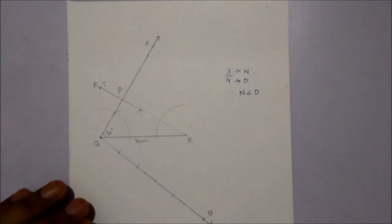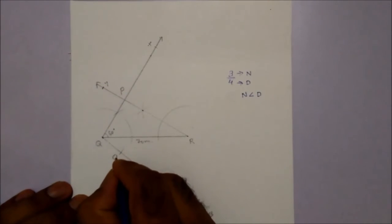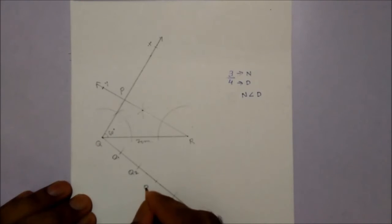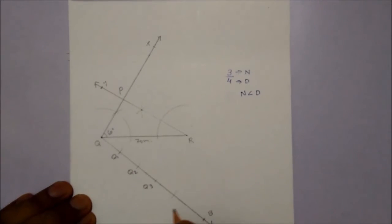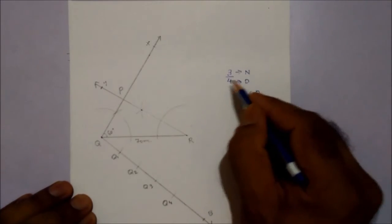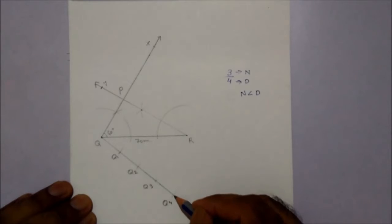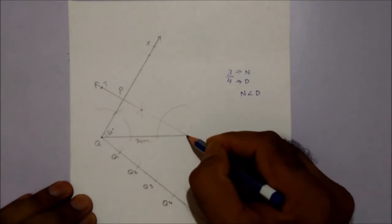Let's name them: Q1, Q2, Q3, and Q4. Denominator shows our original triangle. So we will join Q4 with R.